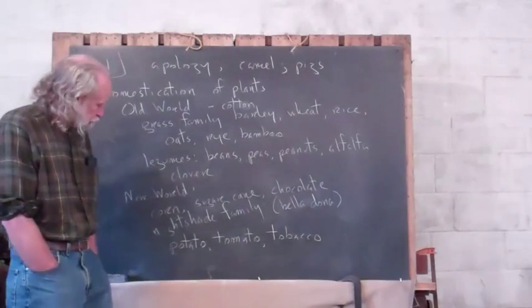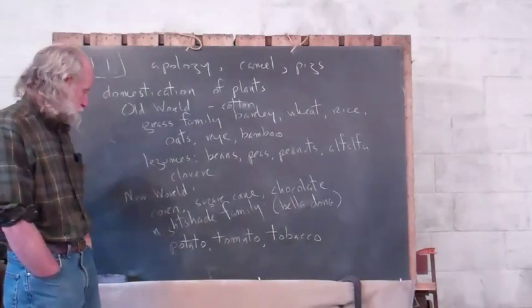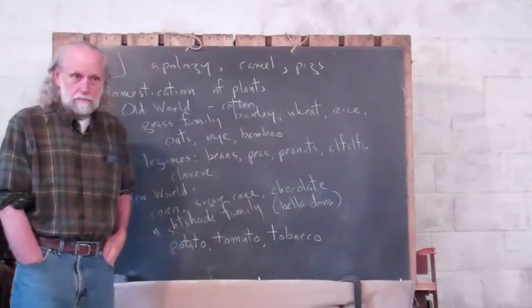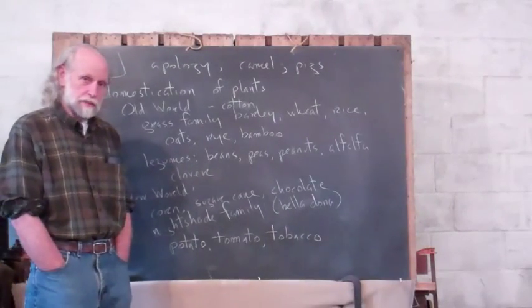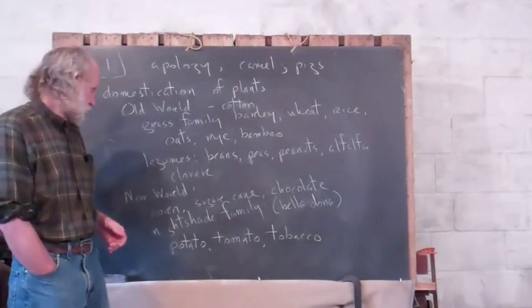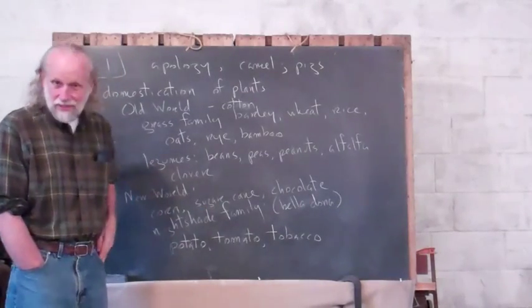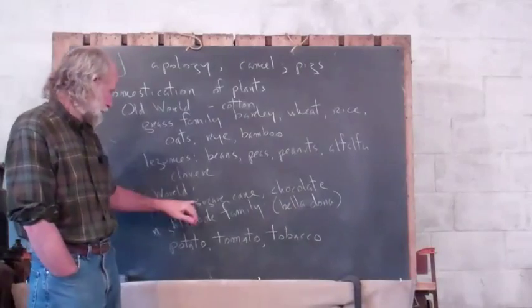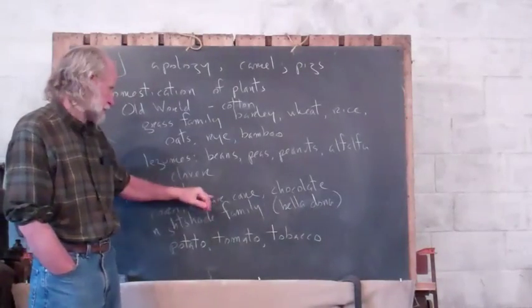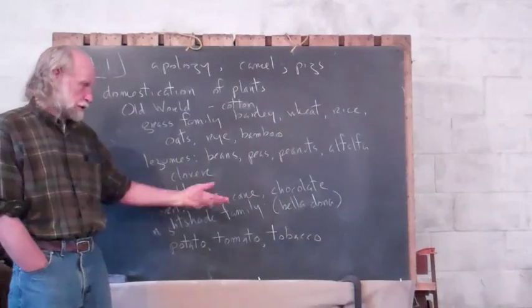You get to the new world, and there are some very, very important plants. Corn. Maize is what it's called a lot of places. Maize. But corn, it comes from the new world. Sugarcane. I think it comes from the new world. It's in the grass. Both of these are in the grass family. And chocolate. Pretty important to a lot of people.